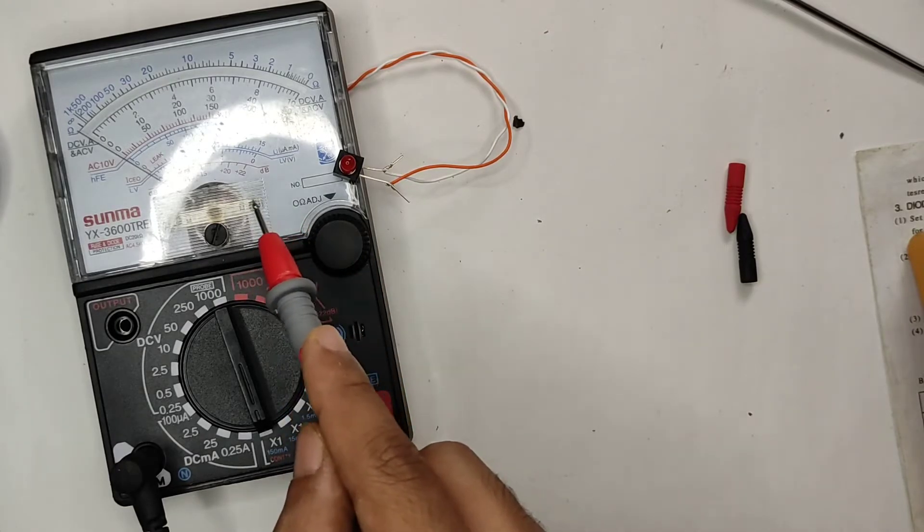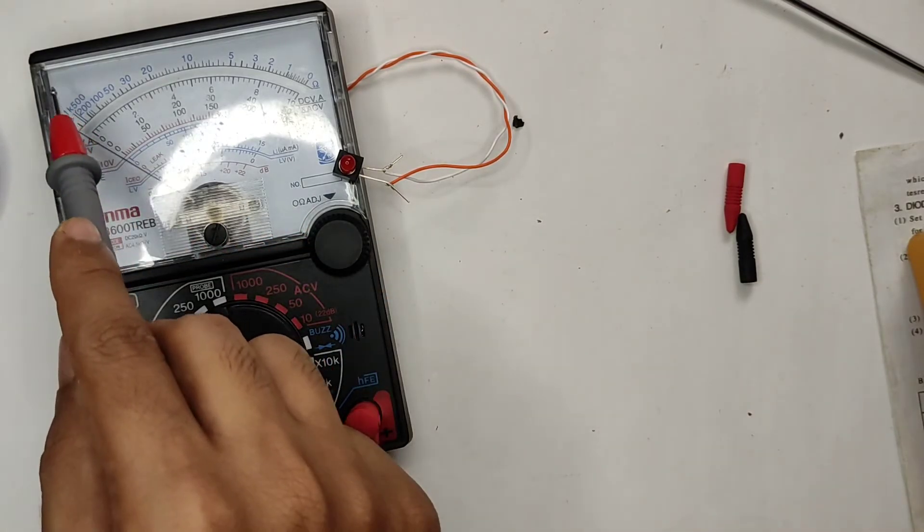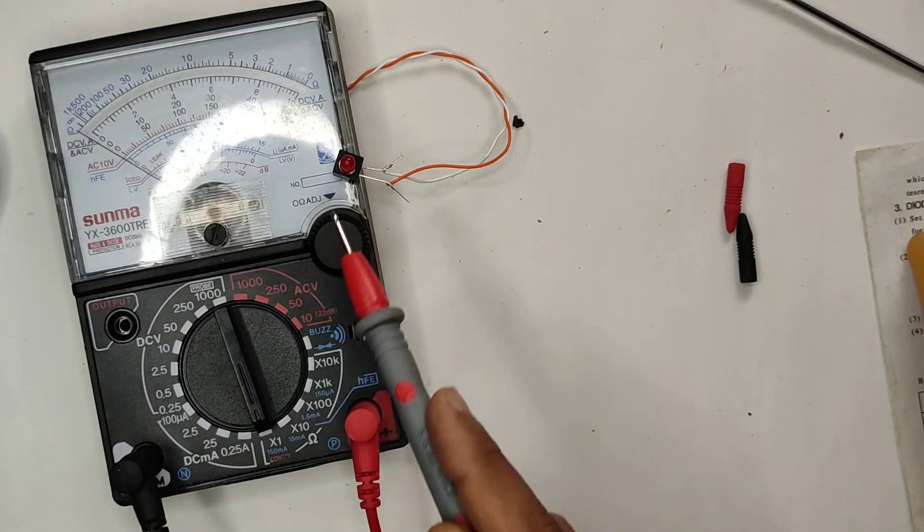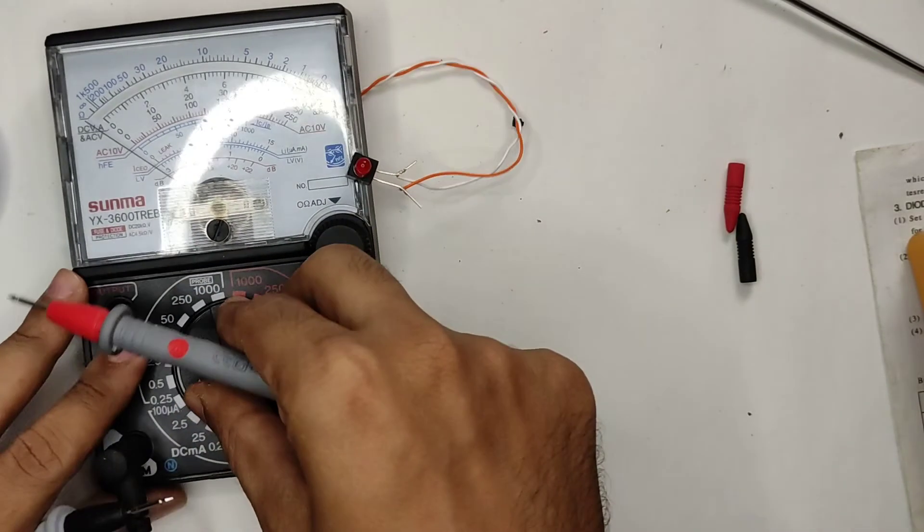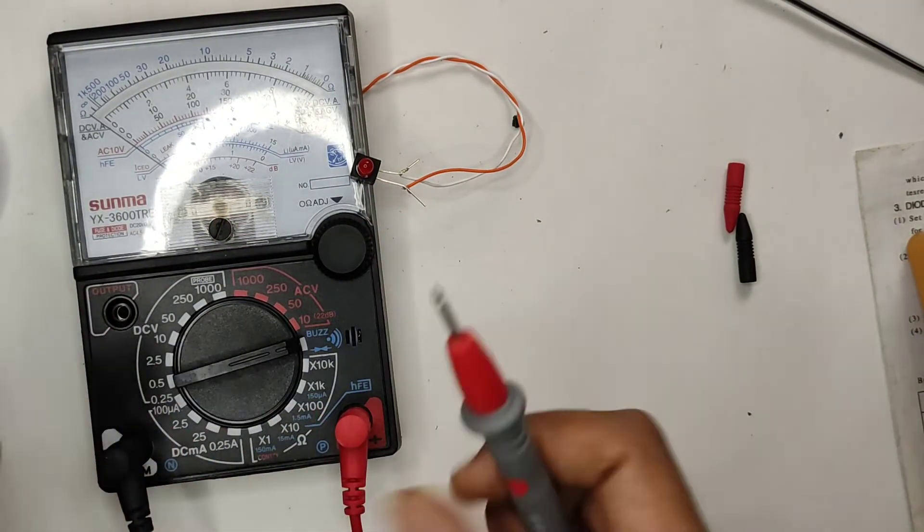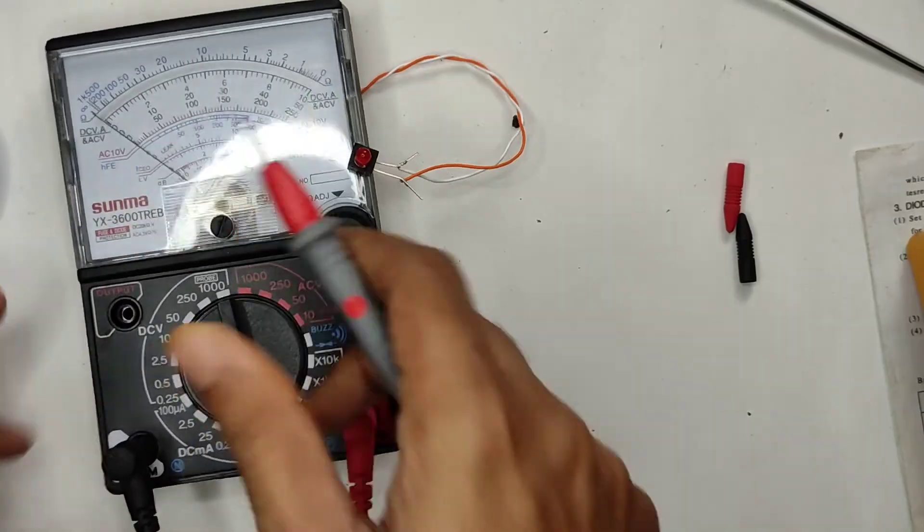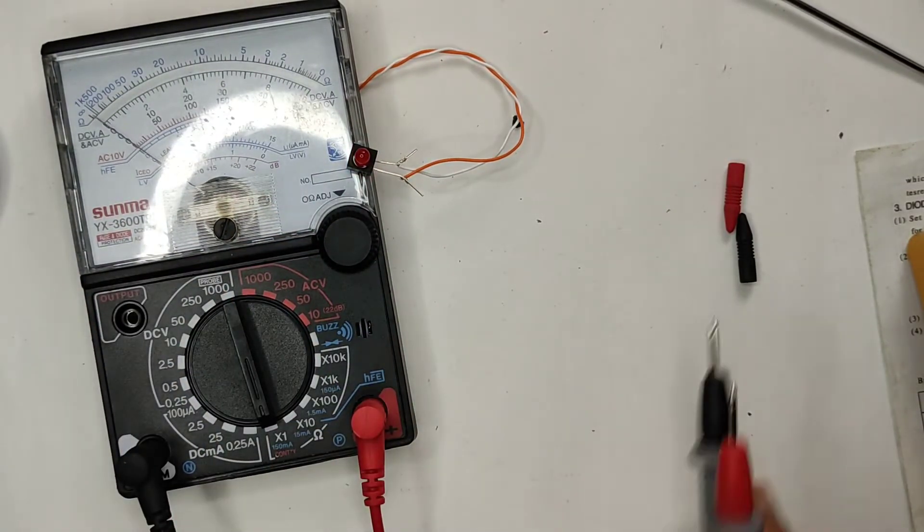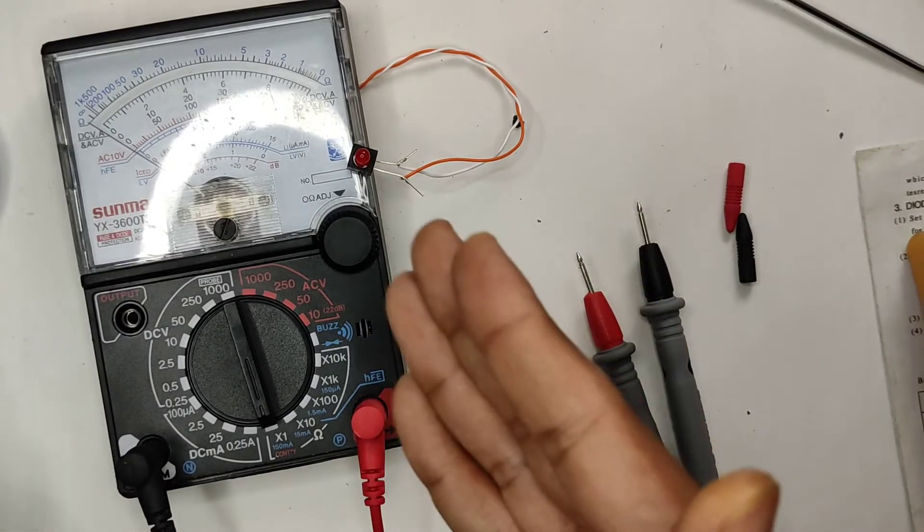Now the only thing is that where shall I even attach this LED here. Shall I make a hole in here or I don't know, I just need to find a spot to keep this LED. What happens if I put it in the buzzer mode? Nothing in buzzer mode, nothing happens. In continuity mode you can see the LED just works fine.